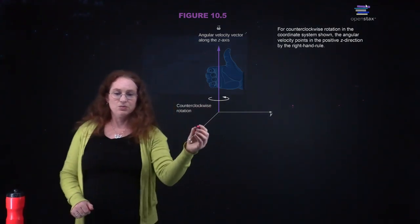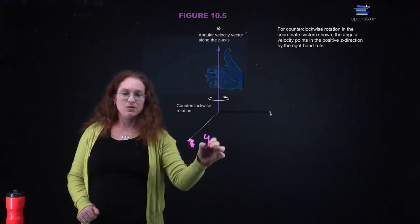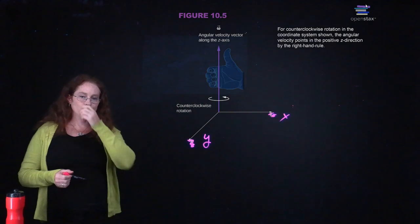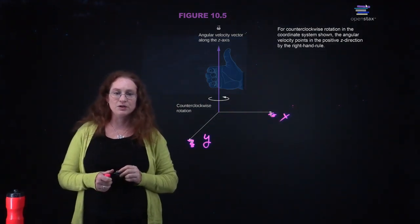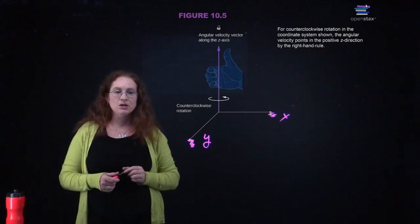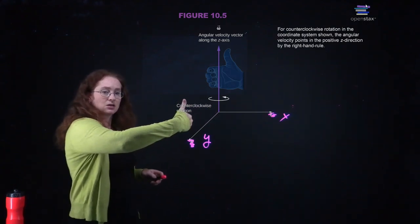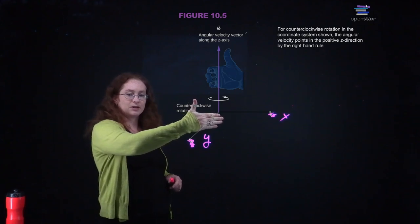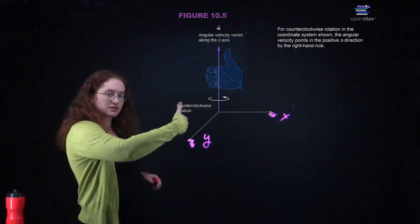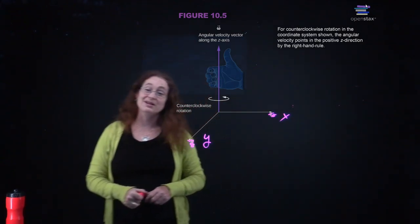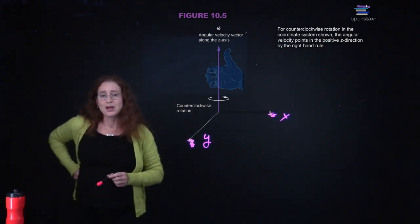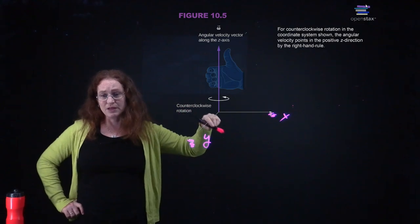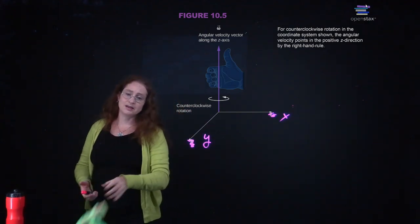Because we're working with mirror images, this is now the y-axis and this is the x-axis. For counterclockwise rotation in the coordinate system, the angular velocity points in the direction of the z-axis. So if you are rotating from x to y — theta is increasing — line your palm up with x and rotate it towards y, and your thumb points in the axis of rotation. That gives you the angular velocity vector. Angular velocity is actually a vector pointing along the axis of rotation, so perpendicular to the plane that is rotating.